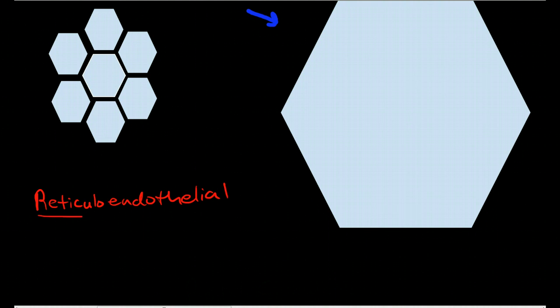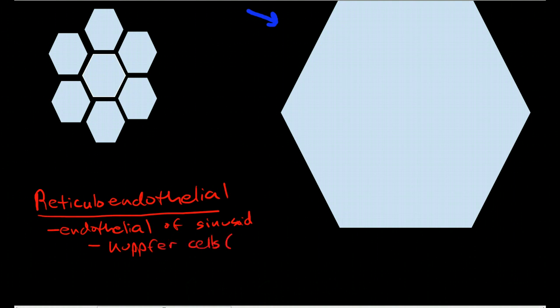These cells include the endothelial cells of the sinusoids, and they include within the sinusoids we have Kupffer cells and these are the macrophages that hang out inside the sinusoids, lining the endothelial cells. And then we have stellate cells and these are cells that are inside the space of Disse, and I'll talk about what that is in a second.